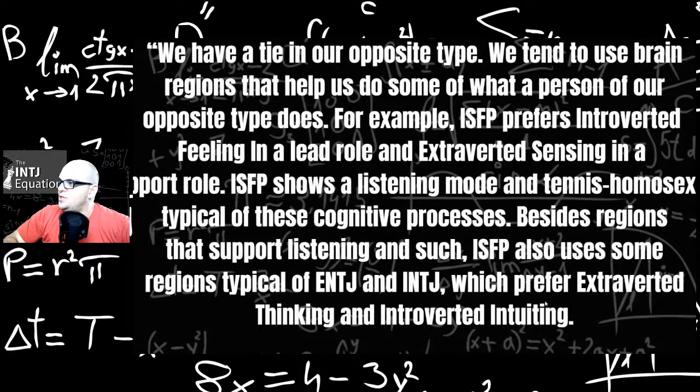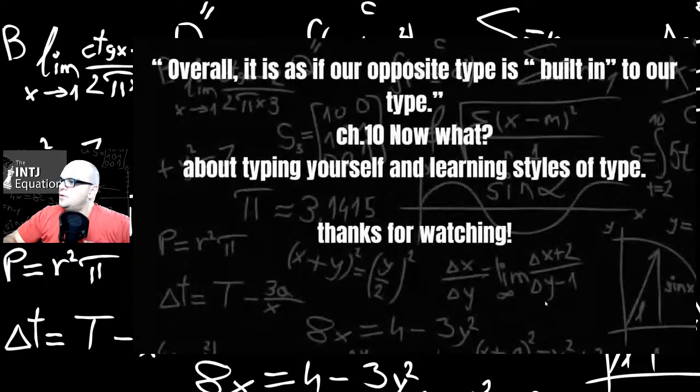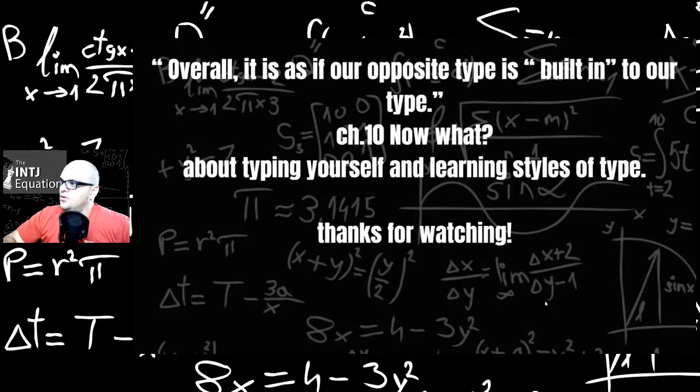We have a tie to our opposite type. We tend to use brain regions that help us do some of what a person in our opposite type does. For example, an ISFP prefers introverted feeling in a lead role and extroverted sensation in the support role. ISFPs show a listening mode in tennis hop. Besides regions that support listening, ISFPs also use some regions typical of INTJs, ENTJs, which prefer Te and Ni. Overall, it is as if our opposite type is built into our type. So it pretty much supports the cognitive transition theory that we have multiple sides of the brain, long before CSJ came up with it. So that's really interesting. I think this book was like 2010, 2011. These studies were conducted before that.